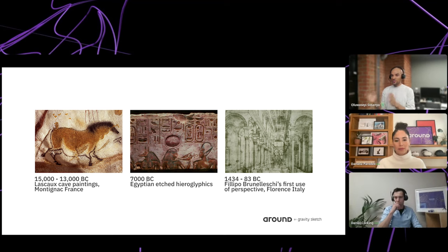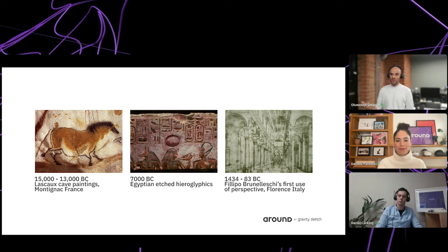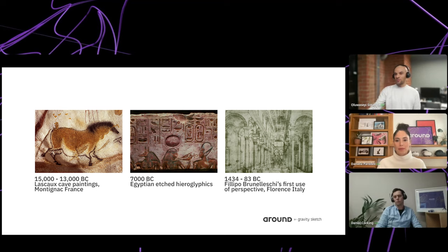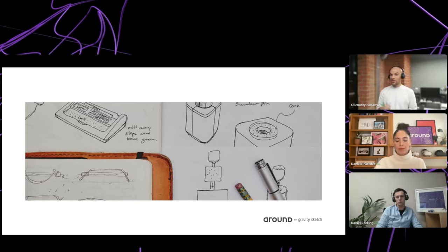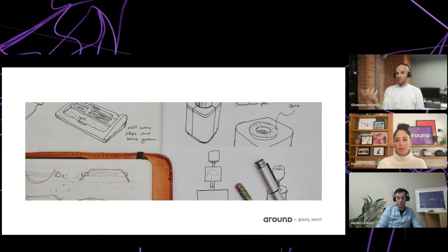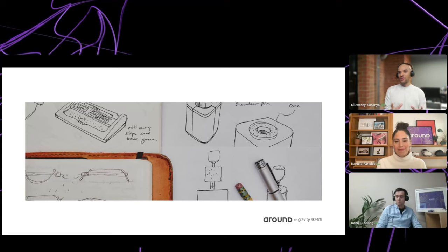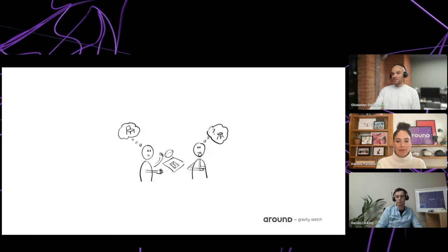It wasn't until the 1400s that we started bringing in perspective, which took communication to the next dimension. The tools we use for communicating in 2D are amazing — a piece of paper and a pen is mobile, can go anywhere, and you can bring anything to it. This interface is magical and I don't think it will ever go away, but there's a way to bring something additional that helps us spend more time communicating in the true way we want to experience products.